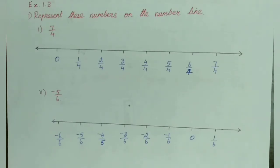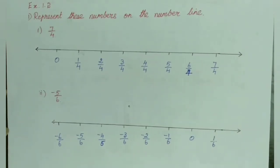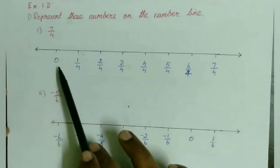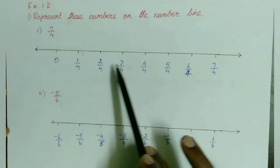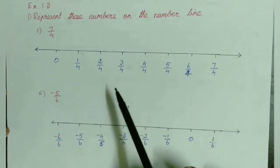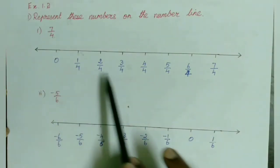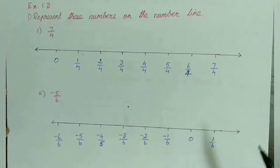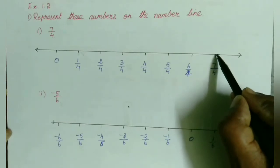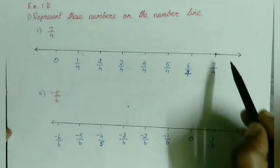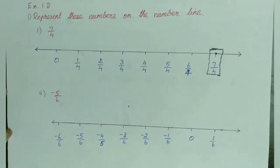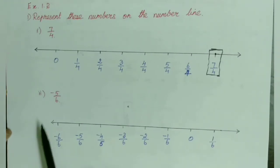Now let us solve exercise 1.2: represent these numbers on a number line. First question: 7/4. I have drawn a number line which starts from 0: 1/4, 2/4, 3/4, 4/4, etc. This number line belongs to rational numbers whose denominator is 4, so the denominator is the same all over the number line. Now we want to mark 7/4. Just keep a dot and put a box — that's it, we have marked 7/4.